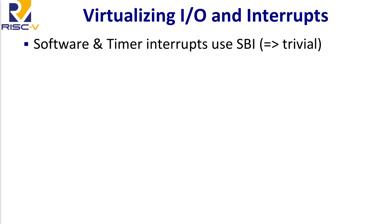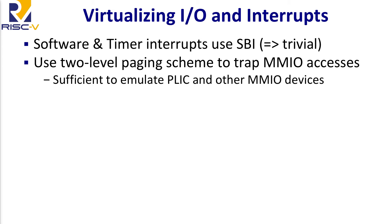Touching on IO and interrupts: the standard software and timer interrupts in the supervisor ISA are fairly trivial to virtualize because they're already exposed to supervisor mode through SBI calls — they're kind of already virtualized. There is still only a single machine timer and a single machine software interrupt bit, and the hypervisor and machine mode are responsible for multiplexing these between guests, so it becomes a software problem.